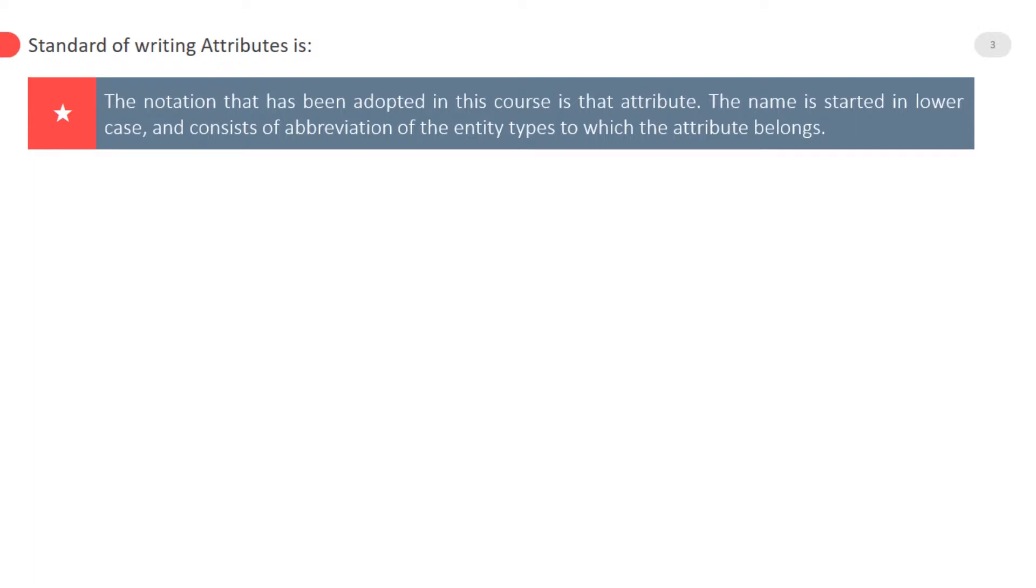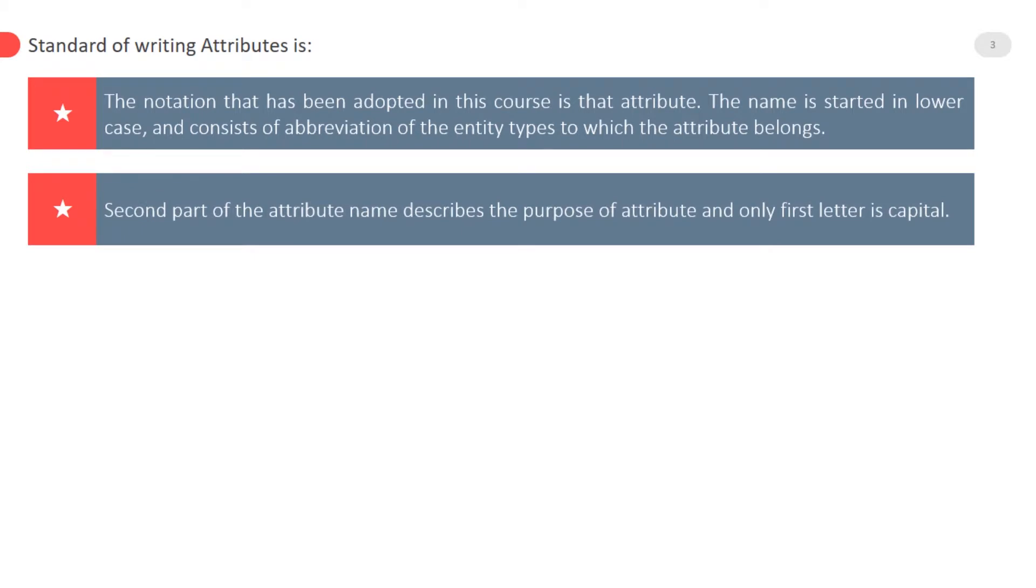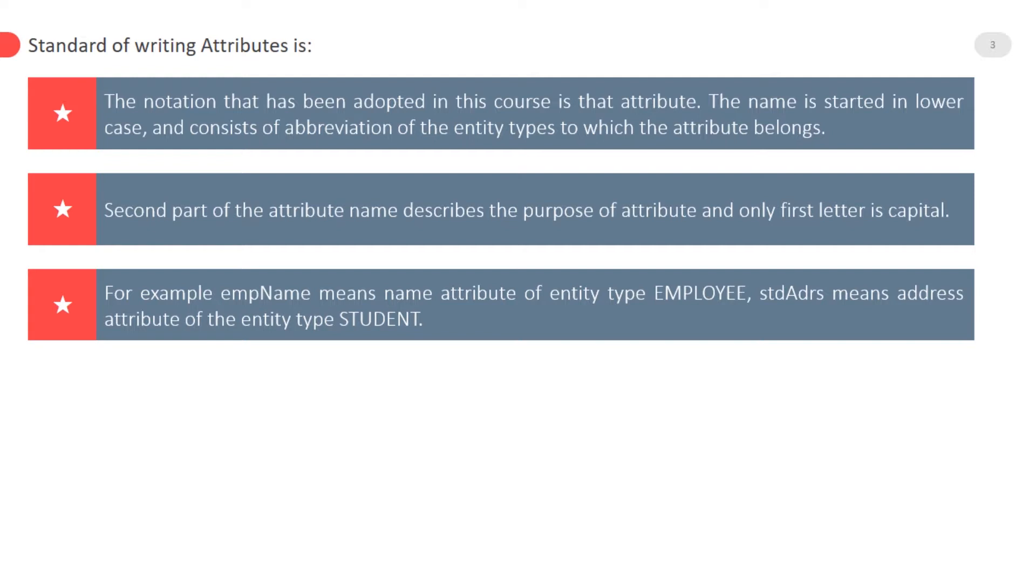Different entity types may have attributes with the same name. The second part of the attribute name describes the purpose of the attribute, and only the first letter is capital. For example, EMP_name means name attribute of entity type employee.